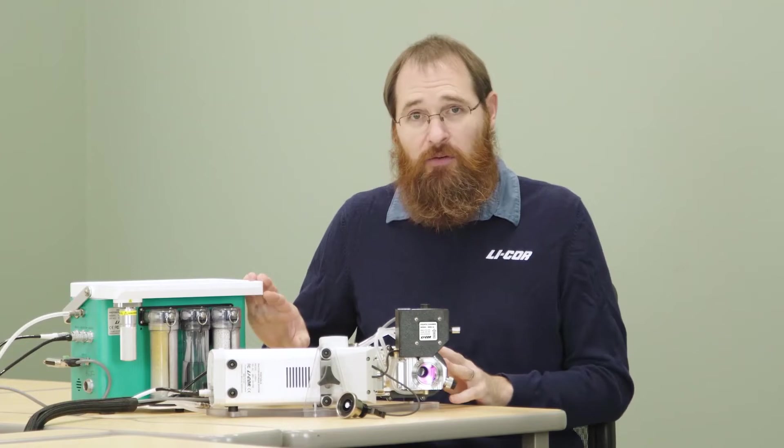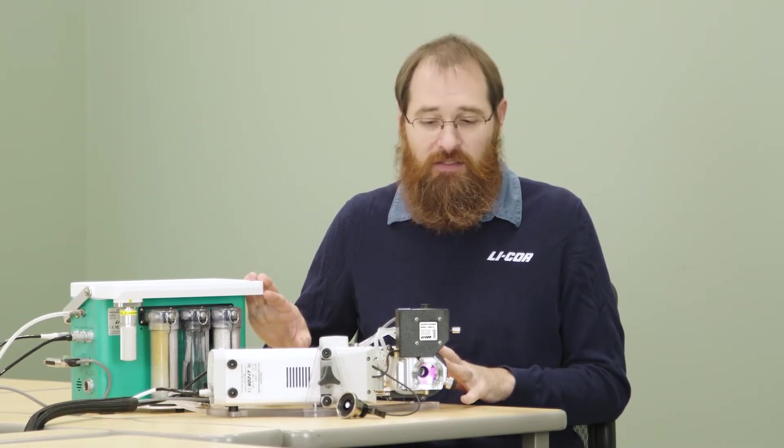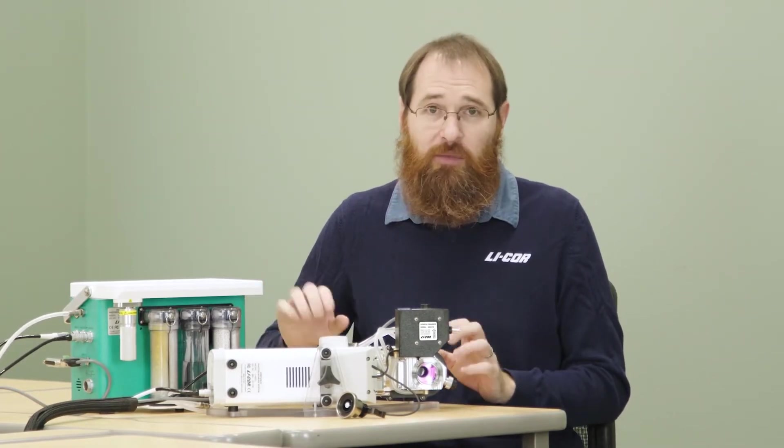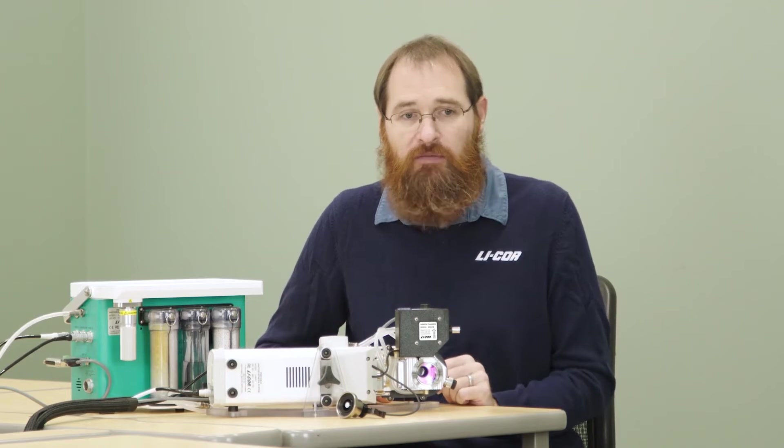This is the LI6800 portable photosynthesis system. It's an instrument normally used to measure leaf level physiology, things like carbon assimilation, stomatal conductance, chlorophyll fluorescence, at the leaf level.